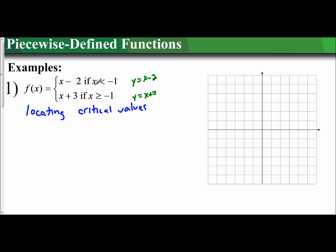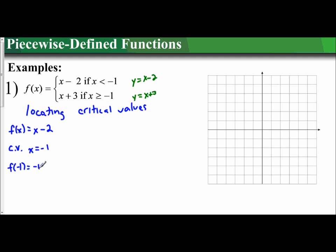I'm going to focus on x minus 2, so f of x equals x minus 2. The critical value is based off of this boundary, so x equals negative 1. I'm going to plug in negative 1 for x. The function is defined at negative 1 as x minus 2, so negative 1 minus 2, which is negative 3. That gives me a point at negative 1, negative 3.